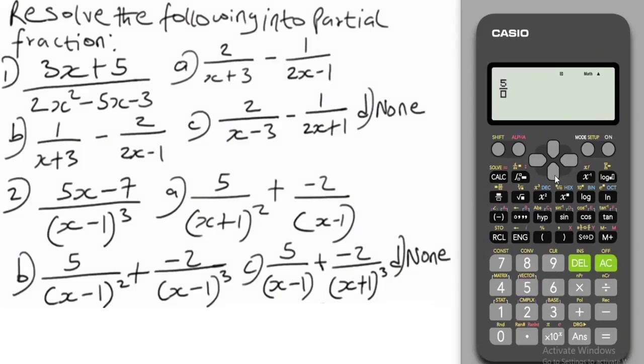So we have 5 over (x + 1)², we have plus a fraction minus 2 in brackets, we have (x - 1). So that's it guys, go to the bracket, press equals and see what we're going to have.